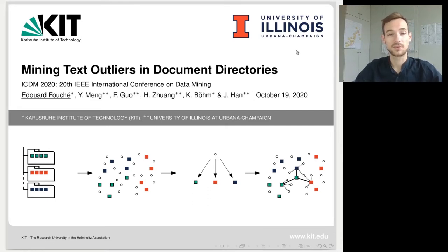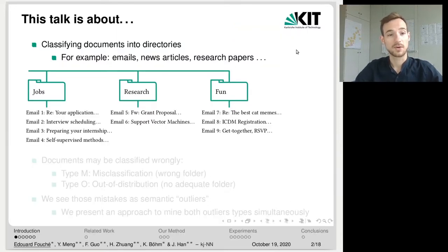So what is this talk about? This talk is about classifying documents into directories. Take for example emails, news articles, or research papers. Such documents are commonly ordered into human-made taxonomies.